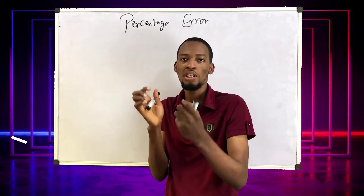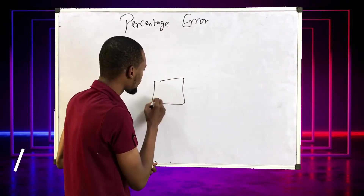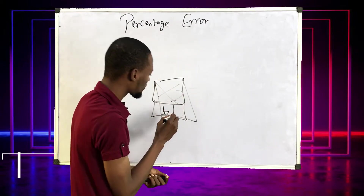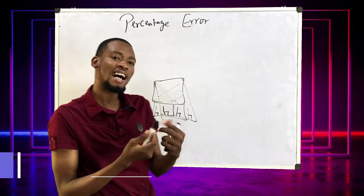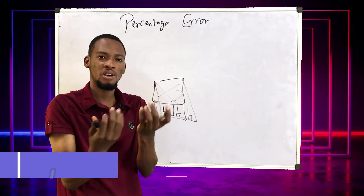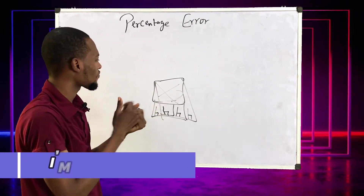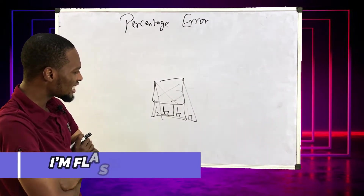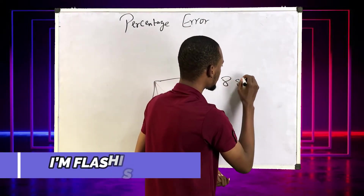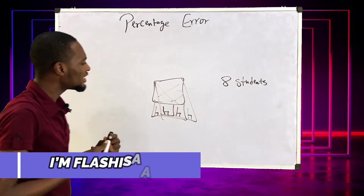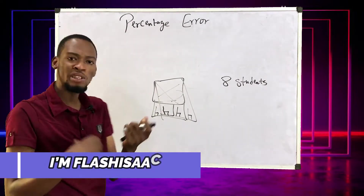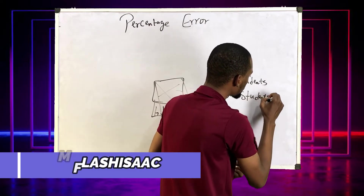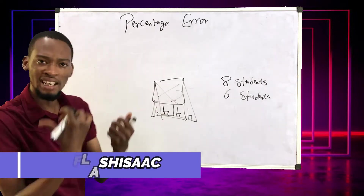Error is the difference between the guessed value and the real value. For example, if I look at a classroom — a building with a roof, with chairs — and I ask you, Root or Joy or Lawrence, how many students are in this class, and you say eight students, then later we go inside the class to inspect and we discover that the number of students in the class is actually six students.